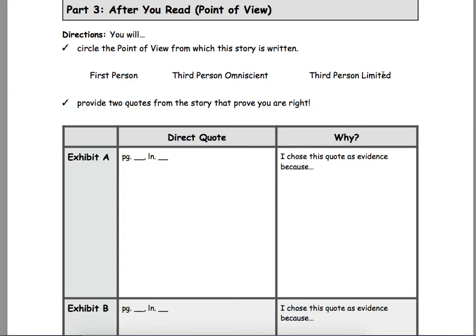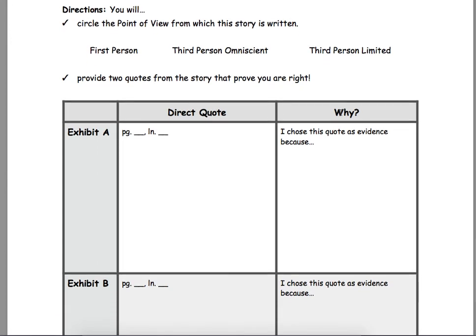Then there's third person limited. This means that the narrator is third person, not in the story, but the narrator focuses on one character's thoughts. It can only tell you what one character is thinking. That's why it's limited. Omniscient means that it's kind of all-seeing. It can jump into the heads of many characters. So, select one of these.